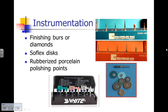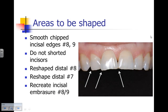The instrumentation for reshaping and contouring includes finishing burrs, finishing diamonds, fine diamonds, soft flex discs to reshape, and a final polish using rubberized porcelain polishing points. We point out to the patient the areas we'd like to reshape and explain that we're not going to shorten the teeth, but in fact bring number 8 in line with number 9.